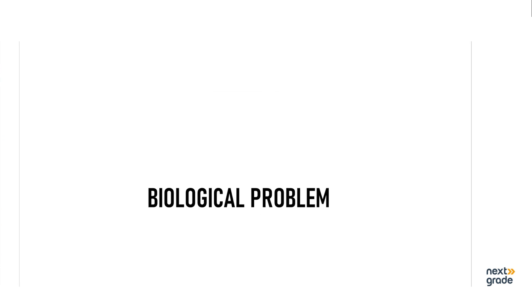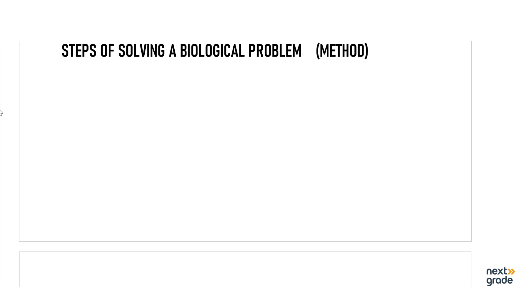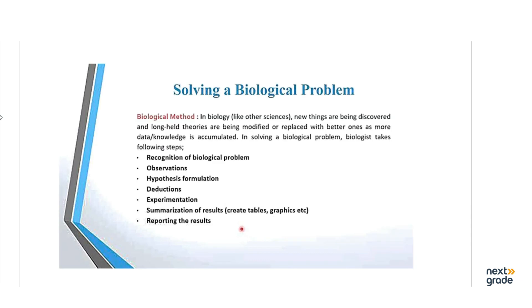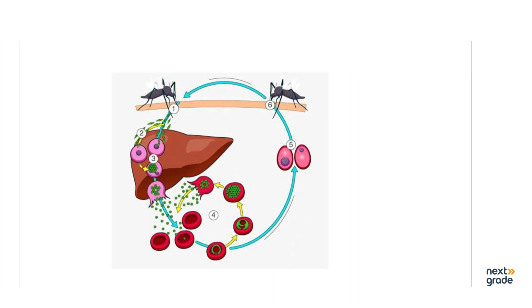First of all, observation — what is the biological problem? I will give you the overview which is related to living organisms, which is called a biological problem, and the method used to solve it, which is called the biological method. There are some steps in the biological method: Recognition of biological problem, Observation, Hypothesis, Deduction, Experimentation, Summarization, and Reporting of the result. We have read all these things.